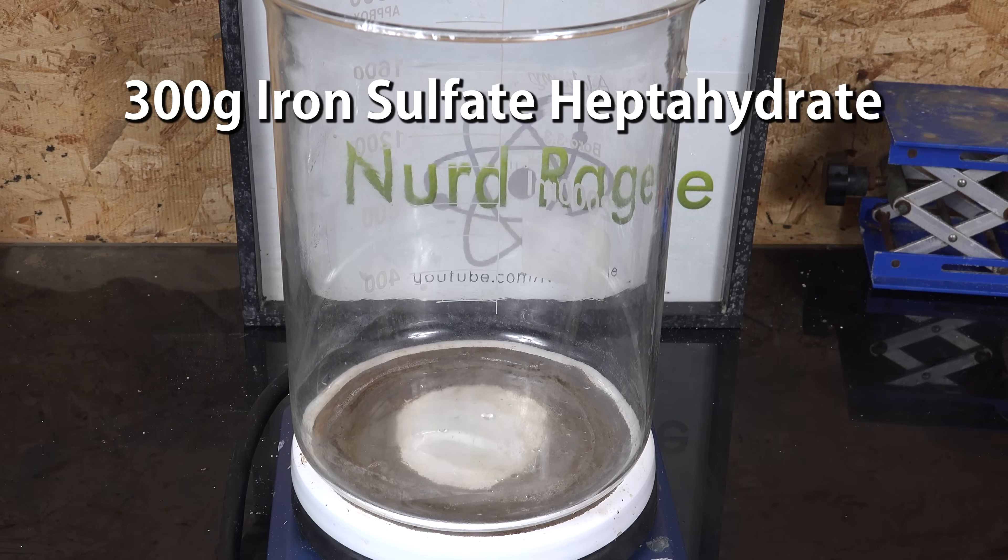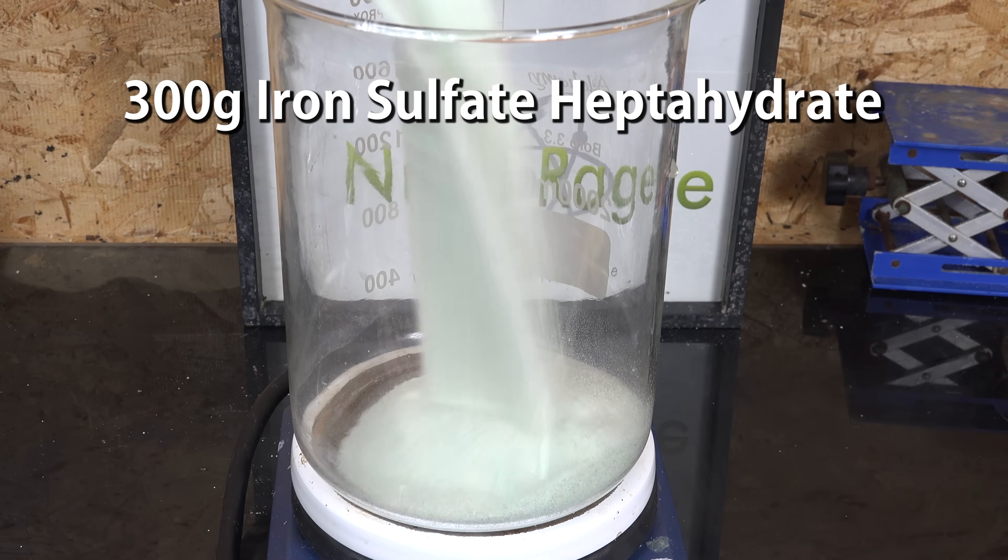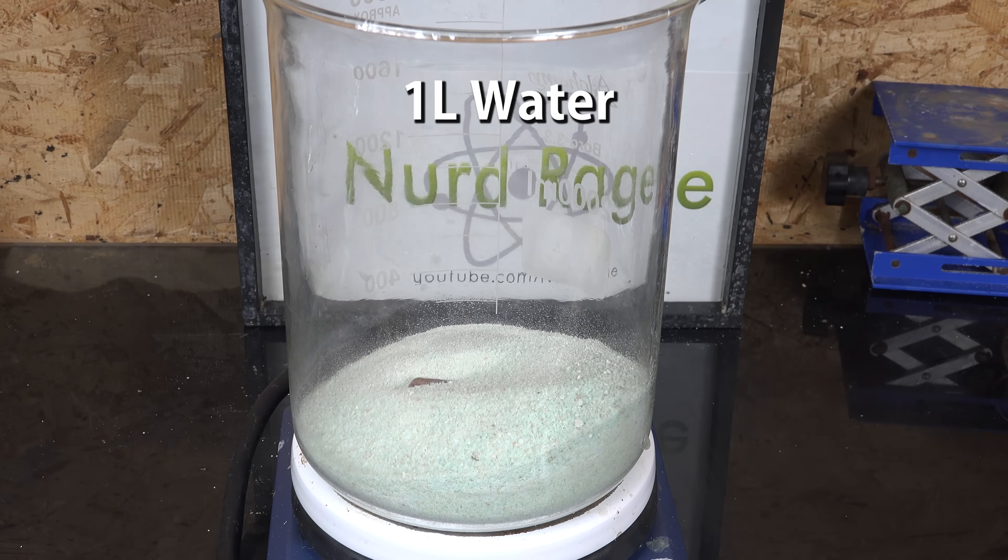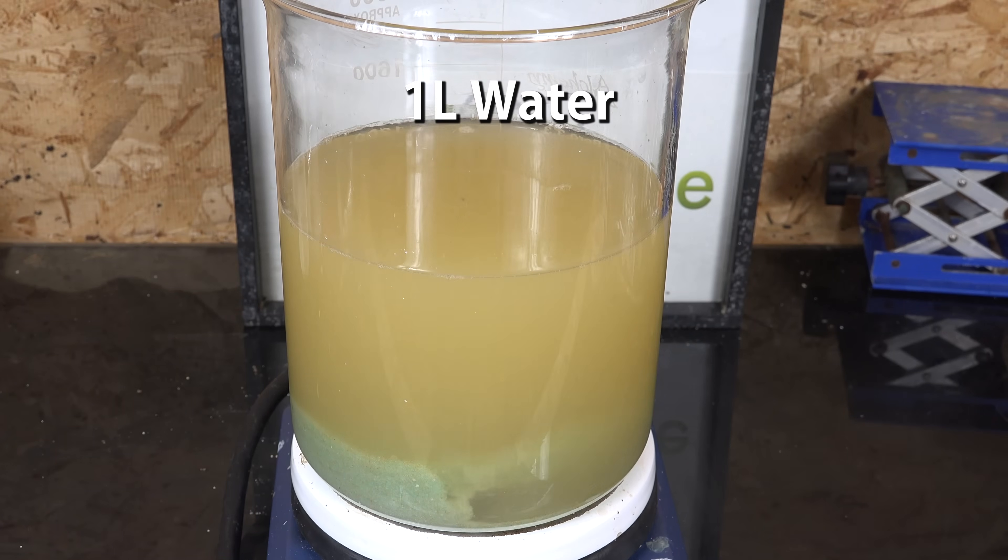First we get 300g of iron(II) sulfate heptahydrate, also called ferrous sulfate heptahydrate. I bought mine as a gardening chemical. Then we dissolve that in 1 liter of water.